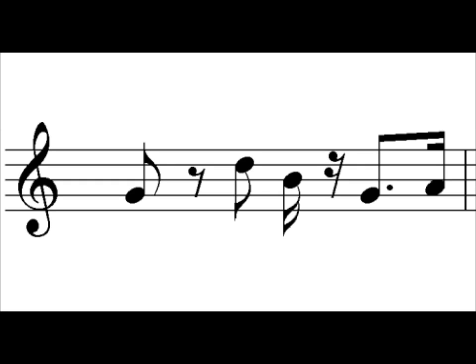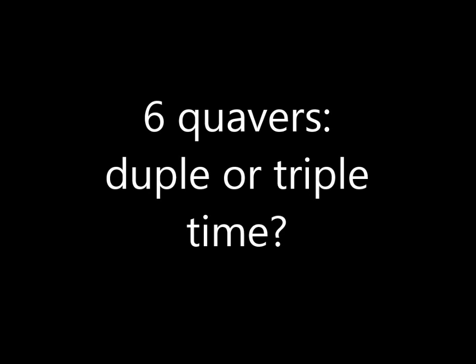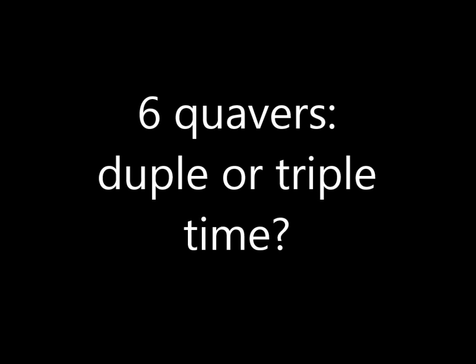And here's the last example we're going to do today. Again we'll start by counting up the beats but because there aren't any crotchets in this bar it makes sense to count the quavers instead. That'll be a bit easier. So there are a total of six quavers in this bar. We can't divide six into four so we can discount quadruple time. So what is it? Duple or triple time?